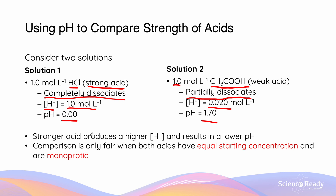Here we can tell that the strong acid produces a higher H⁺ concentration and thus results in a lower pH. However, this comparison is only fair if we have an equal starting concentration — both being 1.0 moles per liter — and both acids are monoprotic, meaning there is only one proton dissociation.